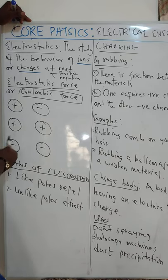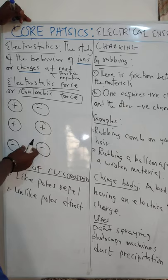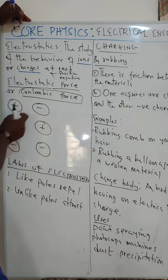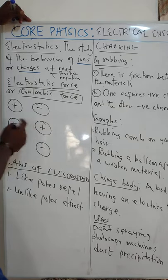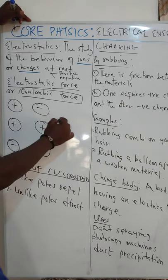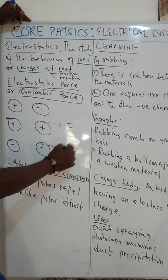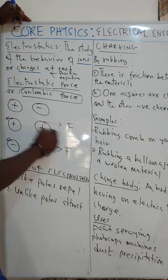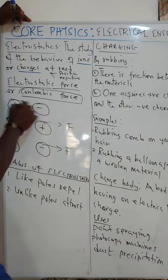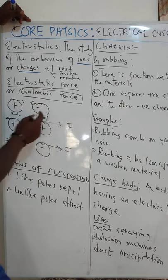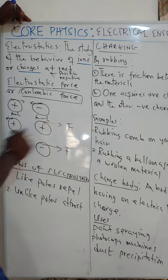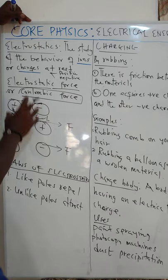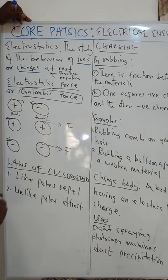If we say like charges, it means positive and positive or negative and negative — these are similar charges. Unlike charges are positive and negative. Once you have a positive and a positive charge, there is going to be repulsion, not attraction. So like charges repel. But when unlike charges attract — positive and negative — these are different, like opposite sexes, like male and female. So this is what leads us to the types of charges and the laws of electrostatics.